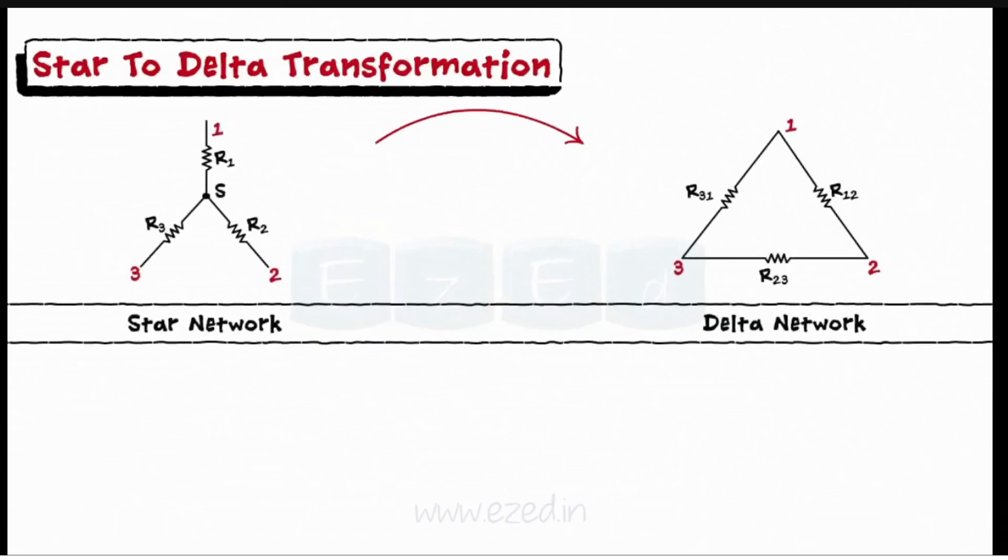The delta resistance between terminals 1 and 2 is calculated as R12 equals R1 plus R2 plus R1 into R2 upon R3.